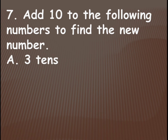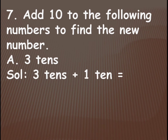The first one is 3 tens. 3 tens means the number 30. For this 3 tens you need to add 10, that is 1 ten. So 3 tens plus 1 ten is equal to 4 tens. In number form you have to write 40 — 4, 0 — 40.